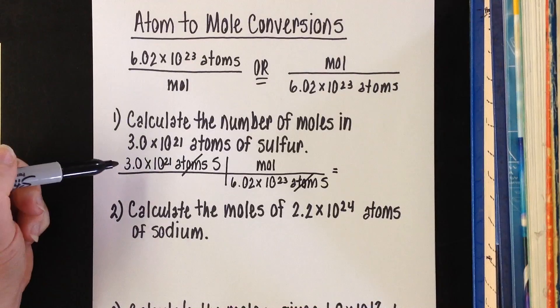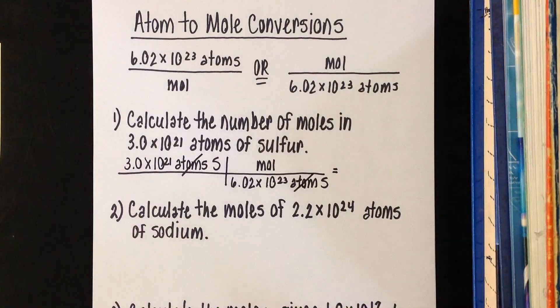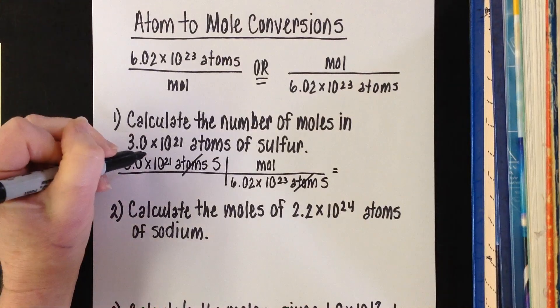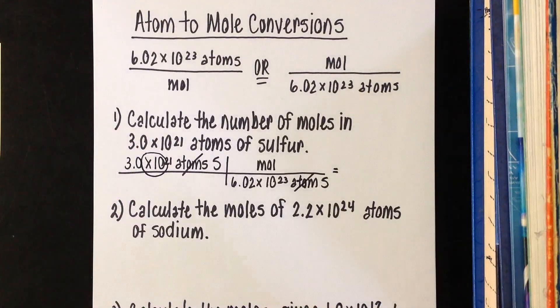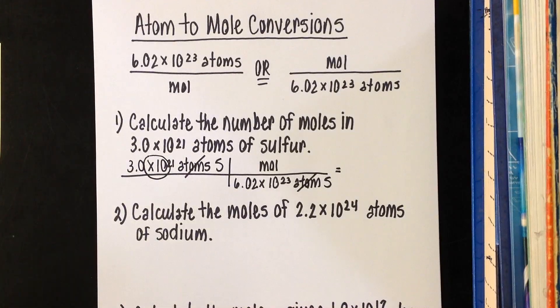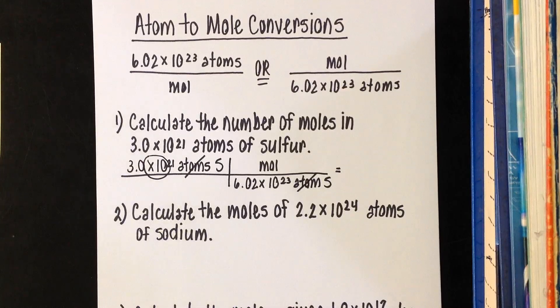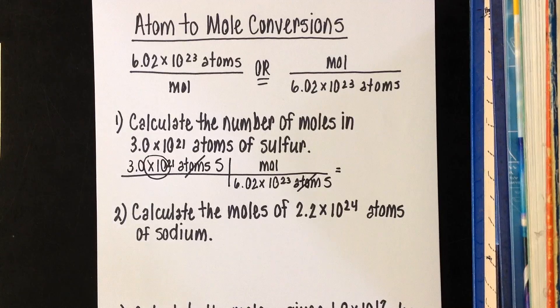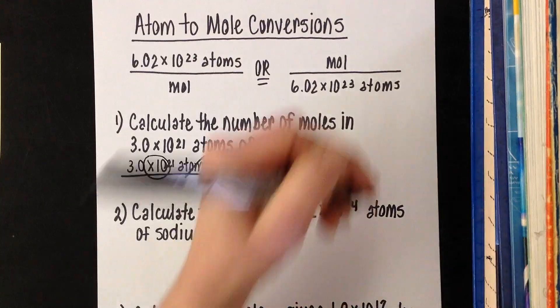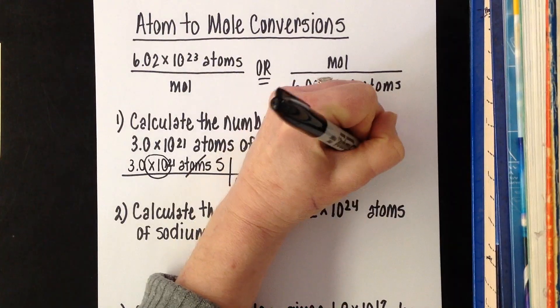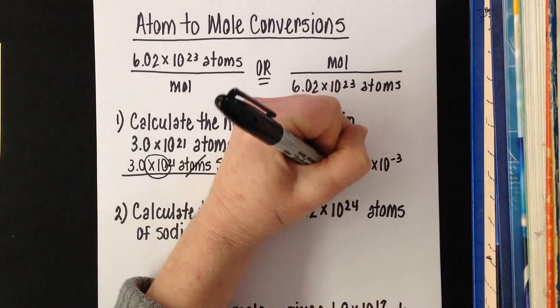This time, because we have one number on the top and one number on the bottom, we are simply going to divide 3.0 times 10 to the 21st by 6.02 times 10 to the 23rd. Little reminder, remember you are not writing this times 10, you are using your exponent button there. Your calculator may have EE, EXP, some models have times 10 to the X. Make sure you're actually punching these numbers in as you follow along. So if we divide, we are getting 4.98 times 10 to the negative third moles of sulfur.